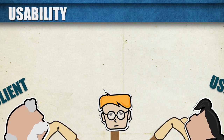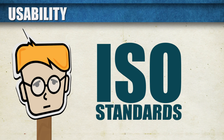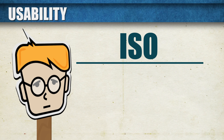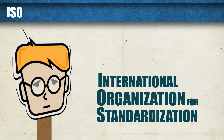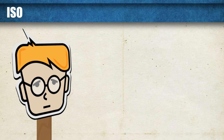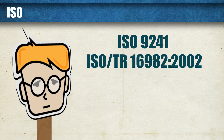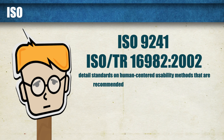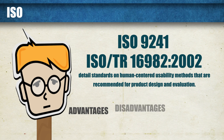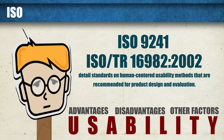Usability has become so critical in design that there are even ISO standards regarding user experience design. ISO, the International Organization for Standardization, coordinates worldwide industrial and commercial standards. ISO 9241 and ISO TR 16982-2002 detail standards on human-centered usability methods that are recommended for product design and evaluation. They discuss the advantages, disadvantages, and other factors relevant to using each usability method.